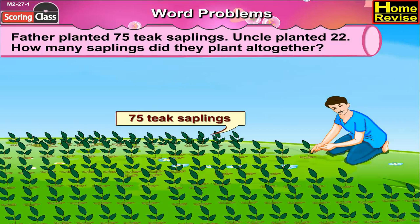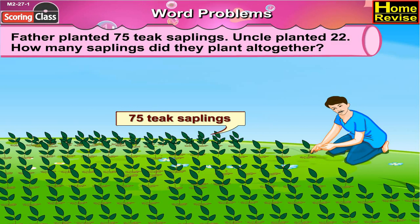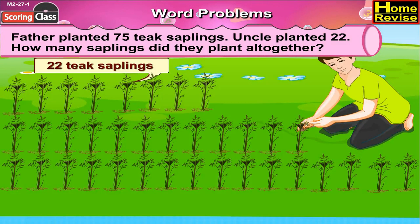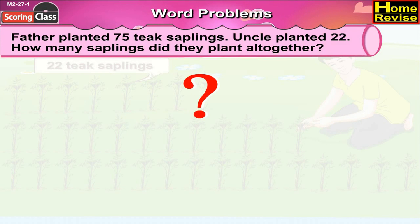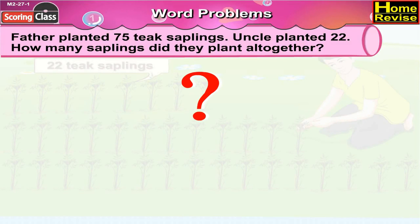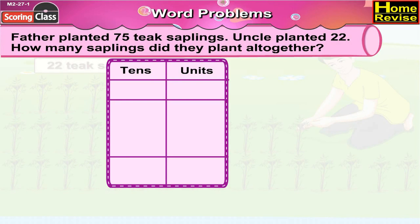Father planted 75 teak saplings. Uncle planted 22. How many saplings did they plant altogether?